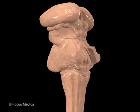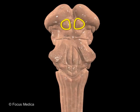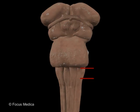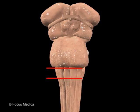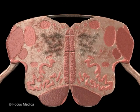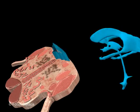The midbrain is studied at the level of the superior colliculus and the inferior colliculus. In the section of the brainstem at the upper medulla level, the expansion of the central canal into the fourth ventricle is well observed.